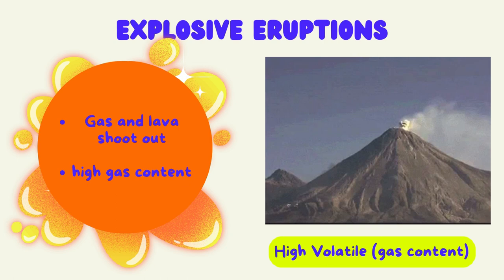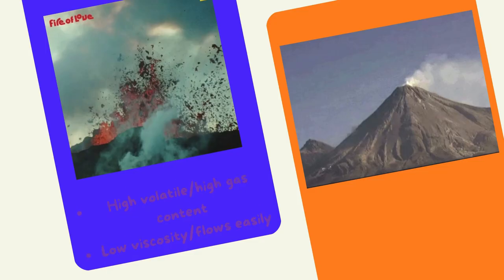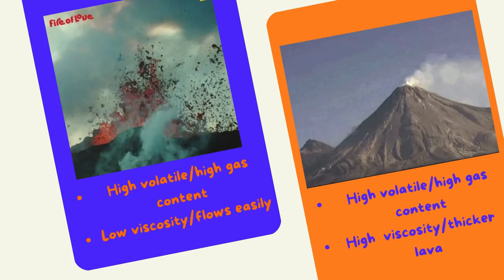Explosive eruptions have high volatile or high gas content, and gas and lava shoots out of the top. If something has high volatile or high gas content and low viscosity, or flows easily, then lava may shoot out of the top of the volcano, like in this video.